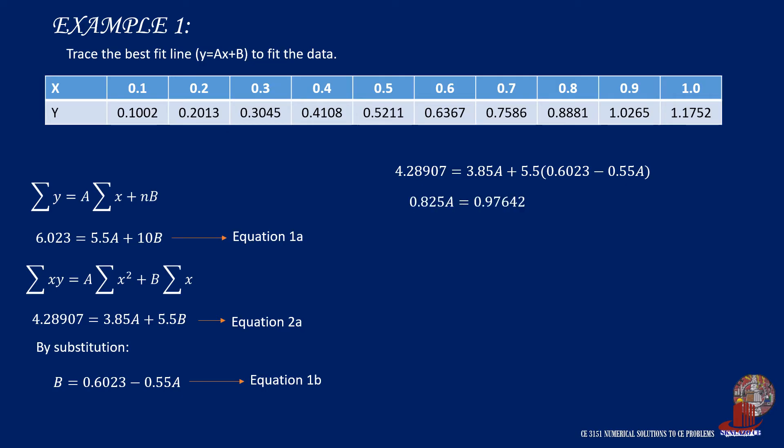So we can collect similar terms and the value of a is determined as 1.183539. Substitute this value back in equation 1b, and b is determined as negative 0.0486467.